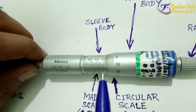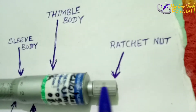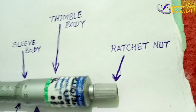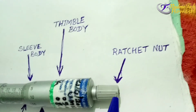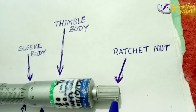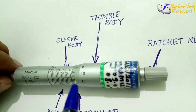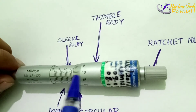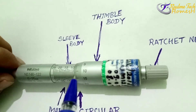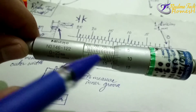This component is the ratchet nut. Uniform pressure is applied on the ratchet nut so that by rotating it with uniform pressure, we can measure any object. The ratchet nut rotates and brings the spindle into contact with the object — that is its function.